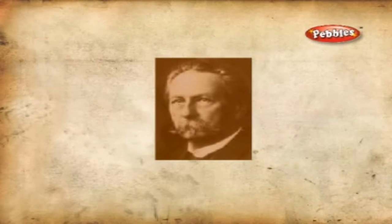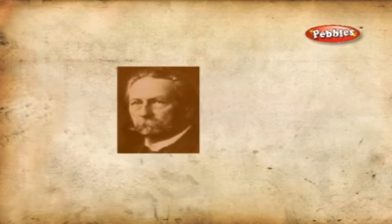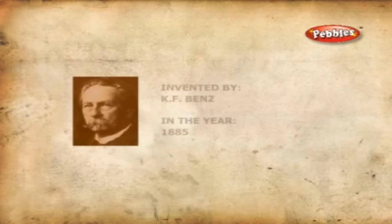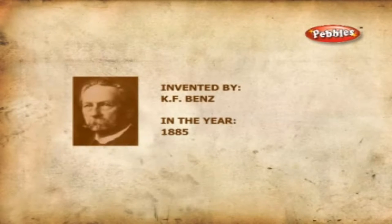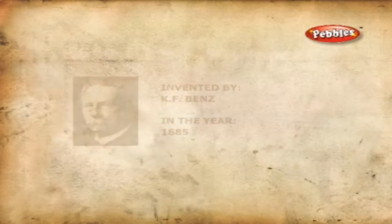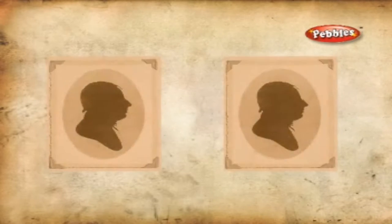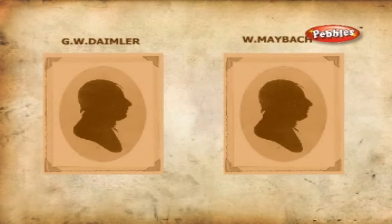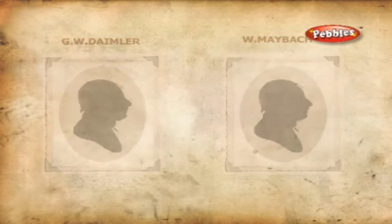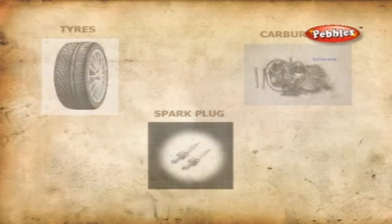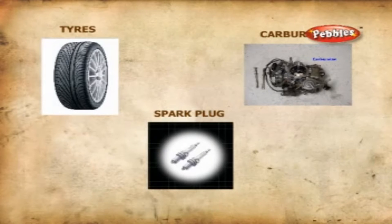In the year 1885, German inventor Karl Friedrich Benz developed a four-stroke internal combustion engine powered by petrol. Shortly afterward, Gottlieb Wilhelm Daimler and Wilhelm Maybach developed a petrol engine that drove a four-wheel carriage. Gradually, components like pneumatic tires, carburetors, and spark plugs were introduced.